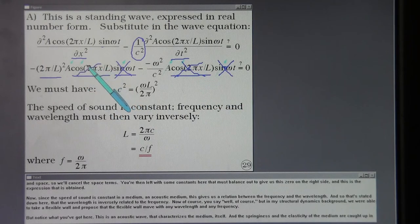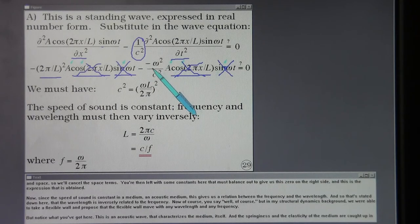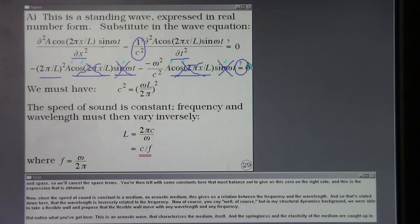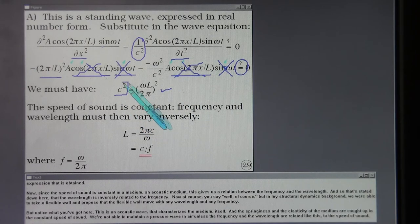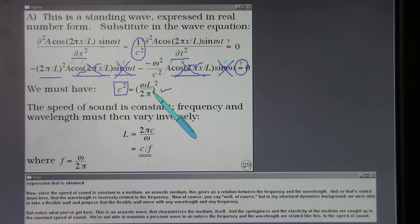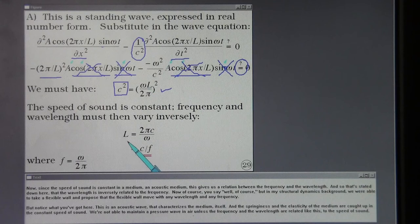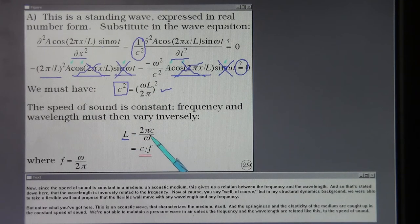You're then left with some constants here that must balance out in order to give us this zero on the right side. And this is the expression that's obtained. Now, since the speed of sound is constant in a medium, an acoustic medium, this gives us a relation between the frequency and the wavelength. And so that's stated down here that the wavelength is inversely related to the frequency.